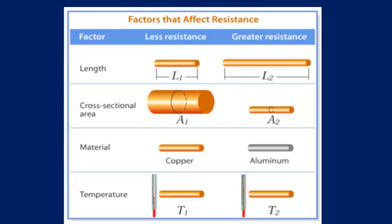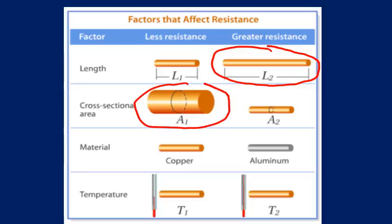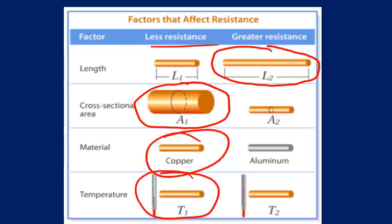Some factors that affect resistance are important to remember. Longer wires have more resistance because electrons have a longer path. The wider the wire is, the more room electrons have to go through, so the less resistance. Some materials are better conductors than others — copper is much better than aluminum. And temperature: the cooler the temperature, the less the atoms are moving around, so the less chance electrons will bump into atoms and slow down.